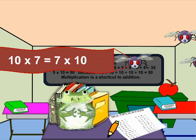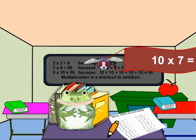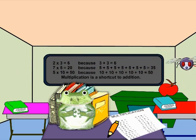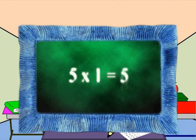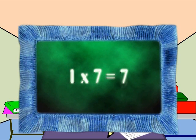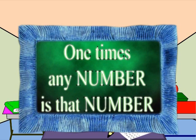And there are even some easy ones. Like anything times one is itself. For example, five times one equals five, or one times seven equals seven. The answer is the same as the number you're multiplying one by. It doesn't change.